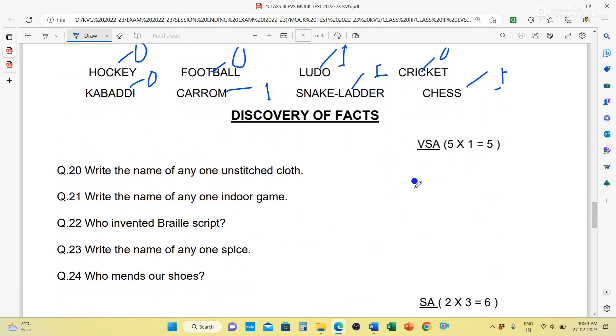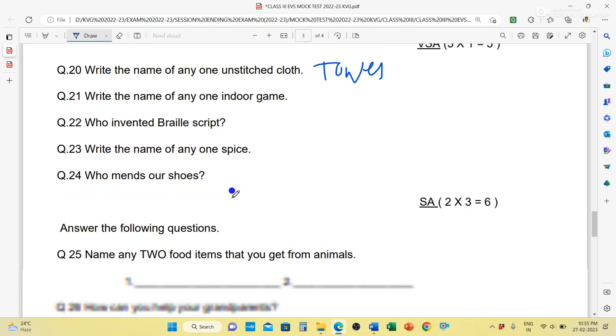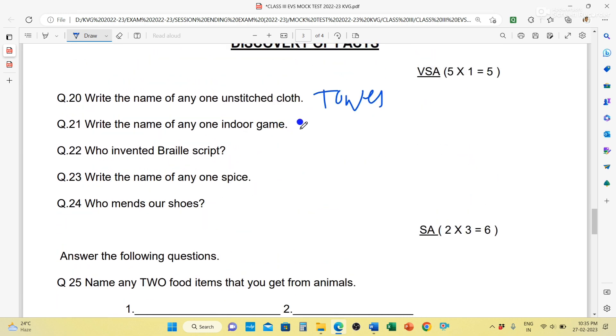Next, Discovery of Facts. First, very short answer questions. Five questions, each carrying one mark. Write the name of any one unstitched cloth. You can write lungi, towel, saree, dupatta. You can write towel. Then next is, write the name of any one indoor game. You can write chess, ludo, carrom. You can write anyone.